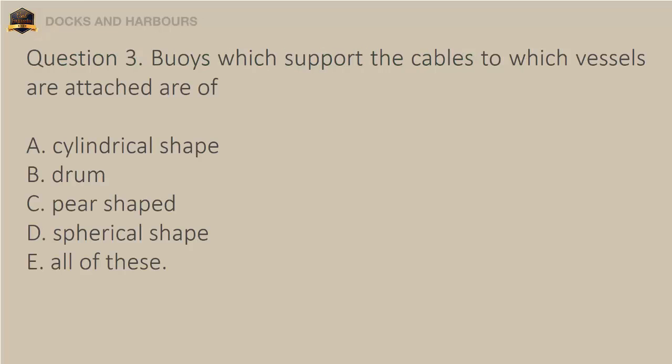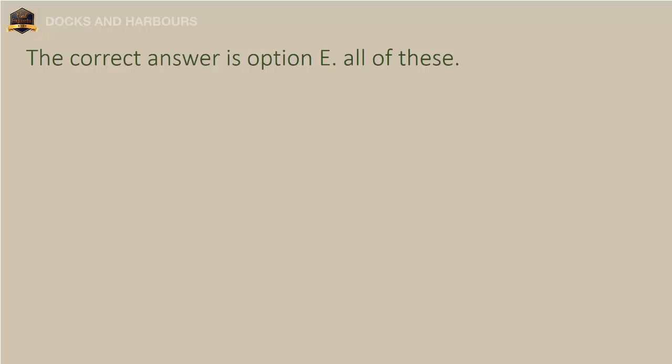Question 3. Buoys which support the cables to which vessels are attached are of: a. Cylindrical shape, b. Drum, c. Pear shaped, d. Spherical shape, e. All of these. The correct answer is option E: All of these.